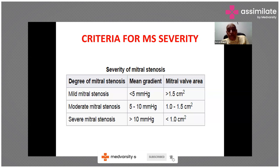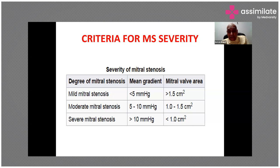Moderate mitral stenosis is defined by a mean gradient of 5–10 mmHg and a valve area of 1.0–1.5 cm². Severe mitral stenosis has a mean gradient greater than 10 mmHg and valve area less than 1 cm². Notably, the American Society of Echocardiography defines severe MS as less than 1.5 cm², with very severe at less than 1 cm², but in India, with greater experience in MS, we use the criteria just described.